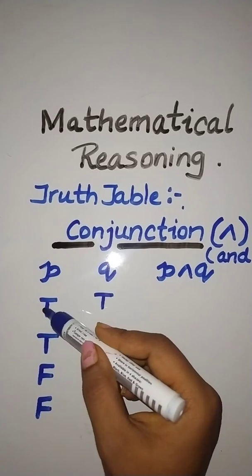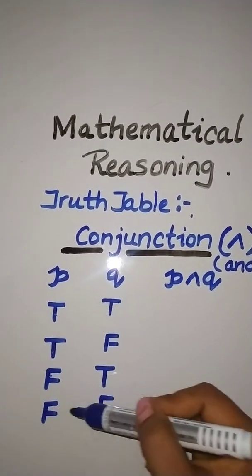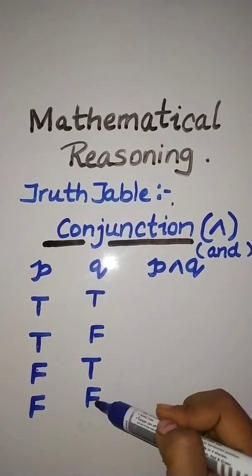P and Q. The conditions are: true, true; true, false; false, true; and false, false. So these are the possible conditions.